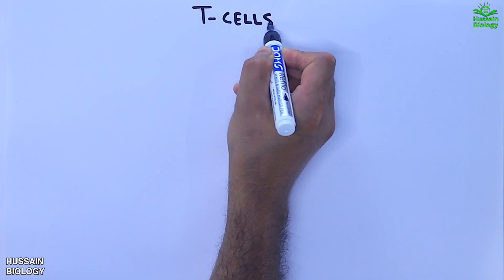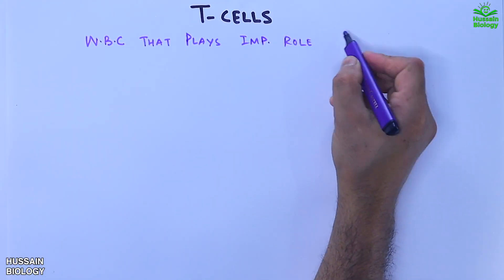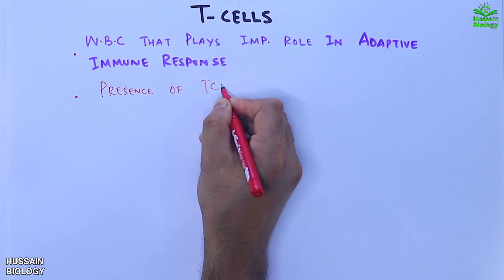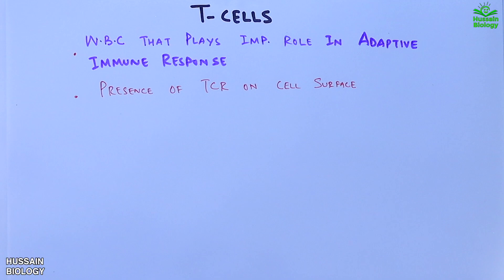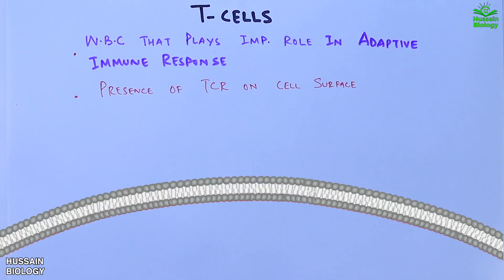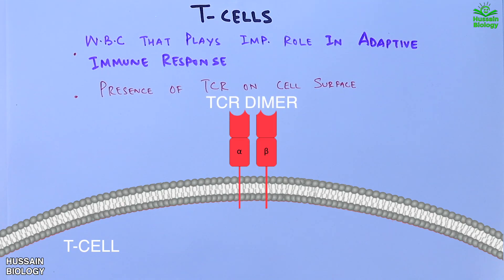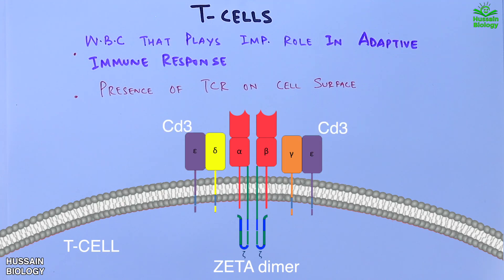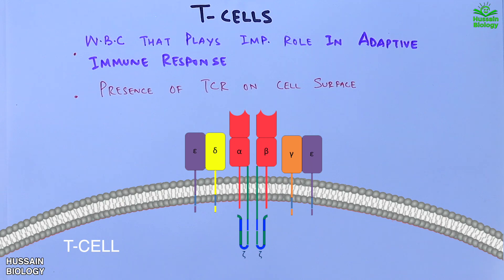The T cell is a WBC that plays a role in the adaptive immune response and has TCR on the cell surface. Looking at the diagram, the T cell surface has a T cell receptor complex with TCR alpha and TCR beta. On the surface we also have accessory molecules like zeta on the intracellular side and CD3 molecules on the extracellular side.